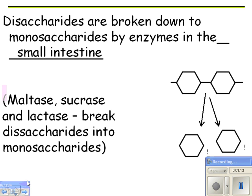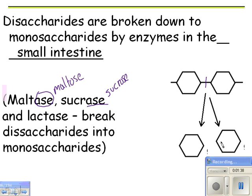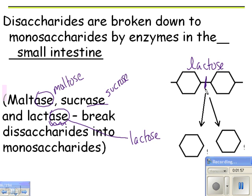Some examples: maltase is an enzyme that breaks down maltose, sucrase is an enzyme that breaks down sucrose — a disaccharide broken up into the monosaccharides it's made of. Lactase is an enzyme that breaks down lactose. If you are lactose intolerant, it may be because you don't have the lactase enzyme and can't break that bond.